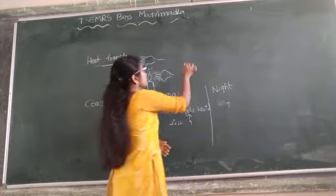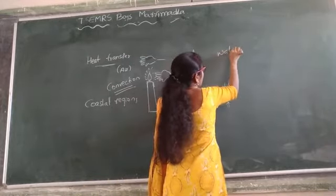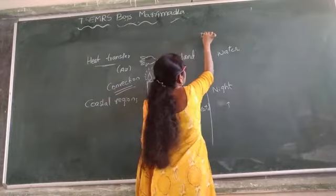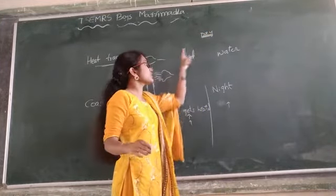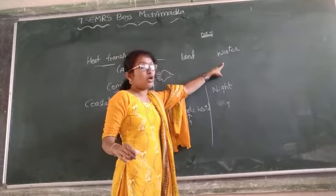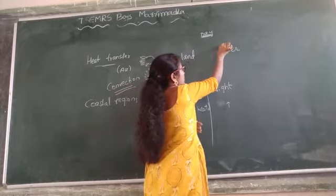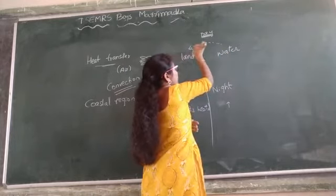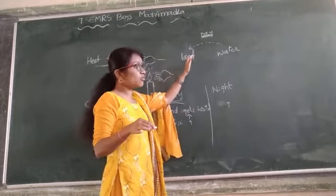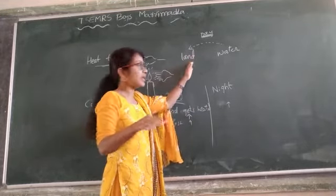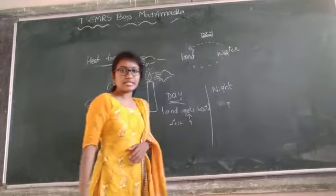So this is the land, this is the water, and the time is daytime. During the daytime in coastal regions, land gets heated fast when compared to the water. So when land gets heated, the air present by the water comes to the land to balance it, and the warmer air from the land moves to the water to complete the cycle.